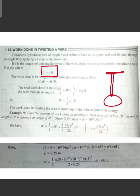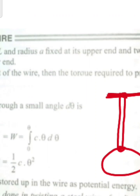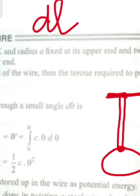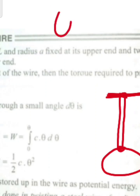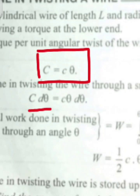The work done in twisting the wire through a small angle d theta is: dW = C theta into d theta.